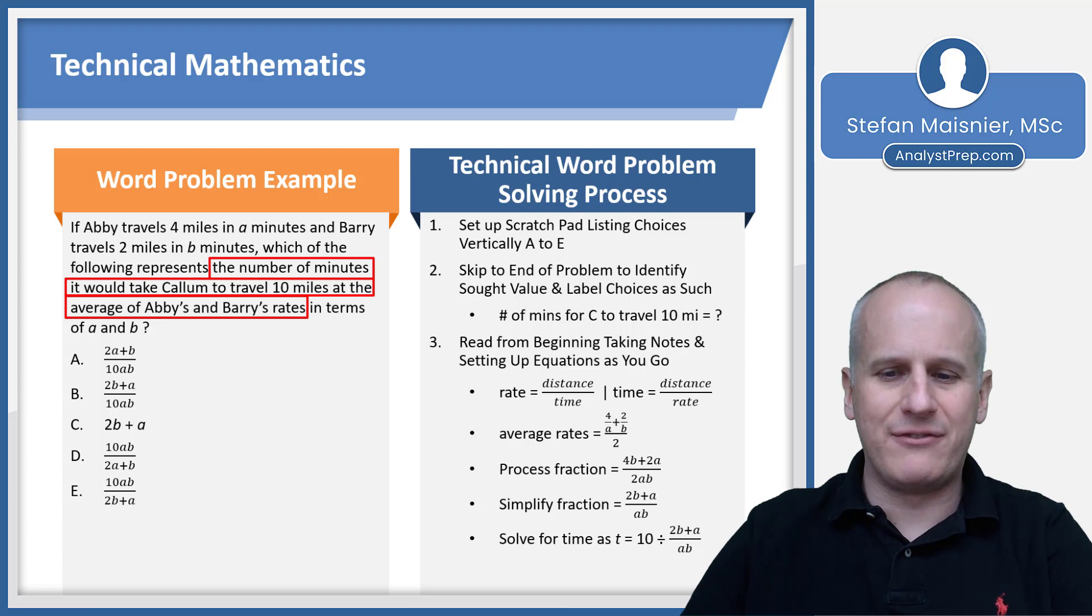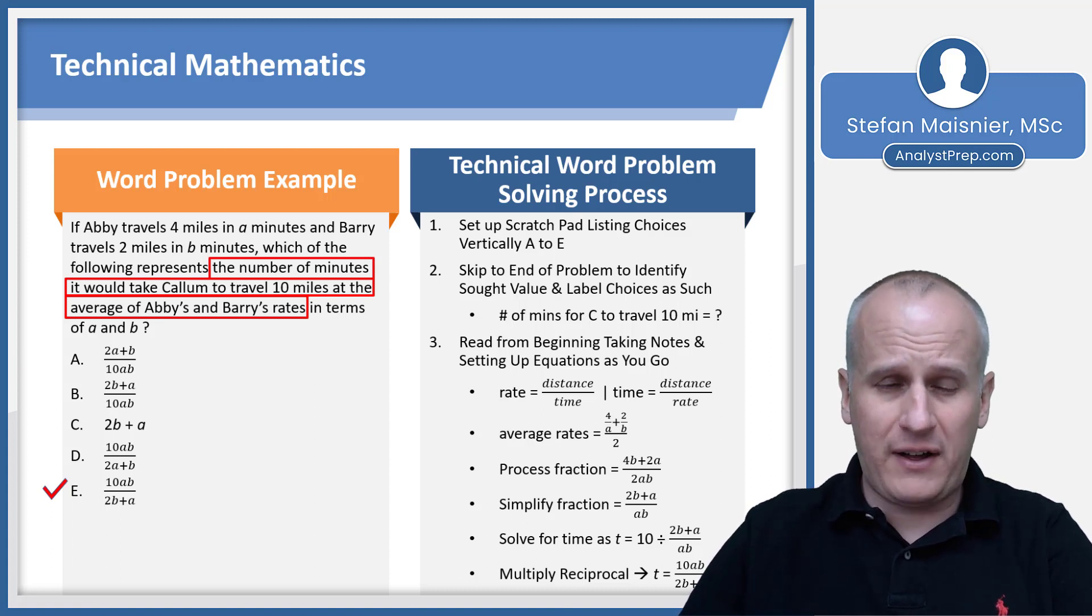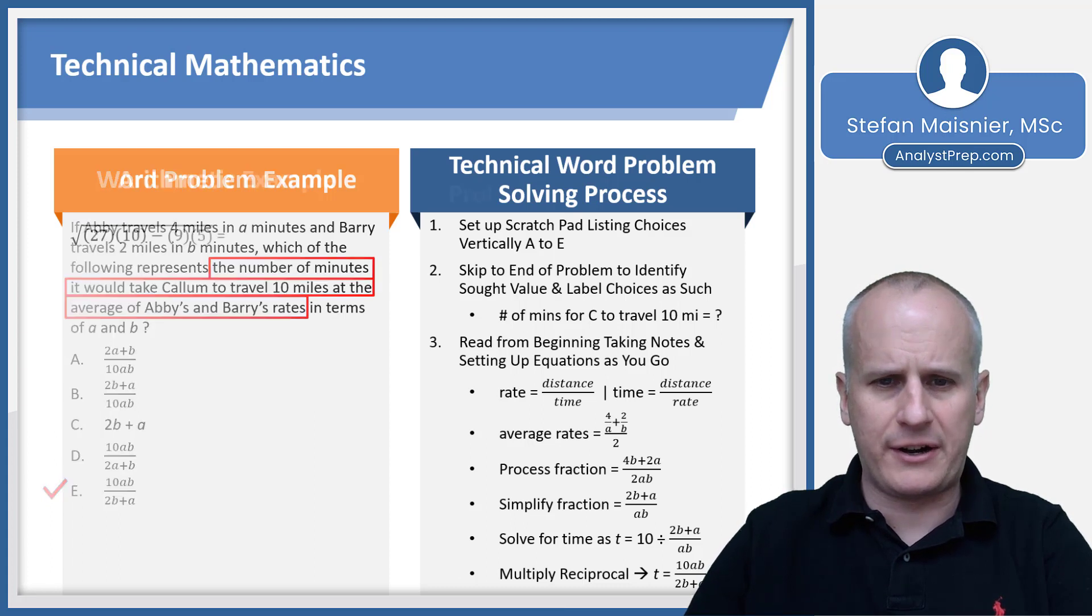Then we'd want to simplify the fraction. We've got a factor of 2 in both pieces of the addition in the numerator and a 2 in the denominator, so that could be simplified down to 2B plus A over AB. Then it's just a matter of solving for the time. We know that 10 would be equal to the distance, which is 10 divided by that average of rates. Then we multiply by the reciprocal, and we'd get 10AB divided by 2B plus A, which matches choice E. If this was a lot for you to follow, you may decide not to do this. In a future lesson, we'll actually revisit this problem and see how we could address it with a different approach. But as you can see, it's relatively straightforward if you understand the algebraic manipulations that are occurring here.